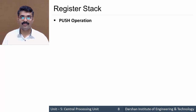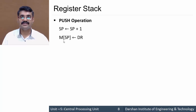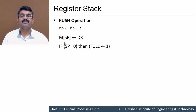For the push operation, the first step is to increment the stack pointer — the top of the stack is incremented by one from the current position. Then the data is stored at the address pointed to by the stack pointer: M[SP] = DR, meaning the content of the data register is transferred to the stack location pointed to by SP. After saving, if the stack becomes full, we set the FULL flag to 1.